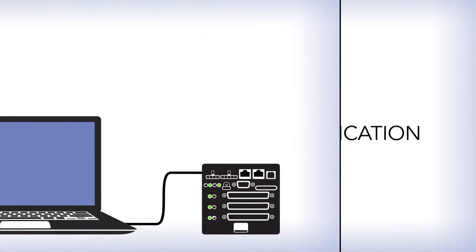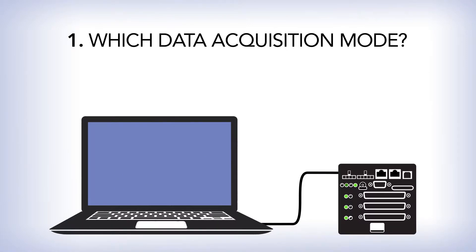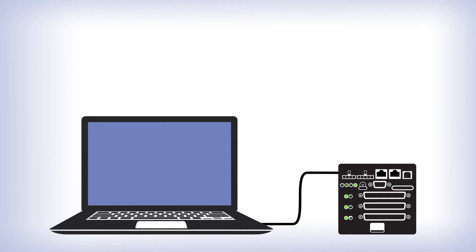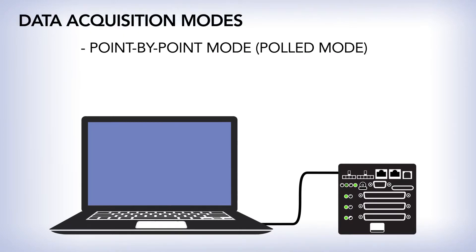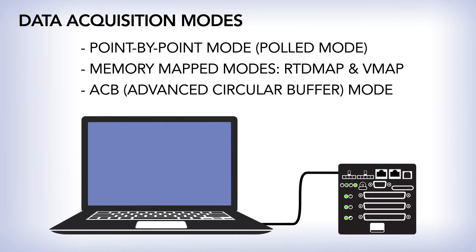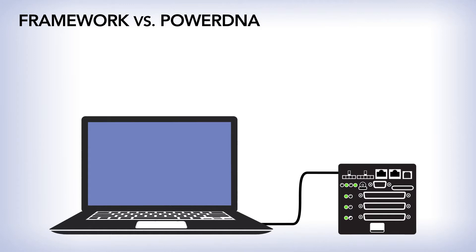Now that you're ready to write your application, there are a couple things to consider: which data acquisition mode is best for your application, and should you use the framework or PowerDNA level? We have three data acquisition modes. One is polled, good to 100 Hz. Two are memory mapped, which are very high speed and give you an answer right away. The third is based on a circular buffer, so you're able to collect a large amount of data and then study it.